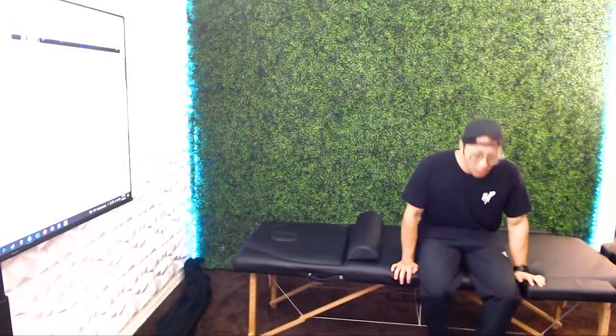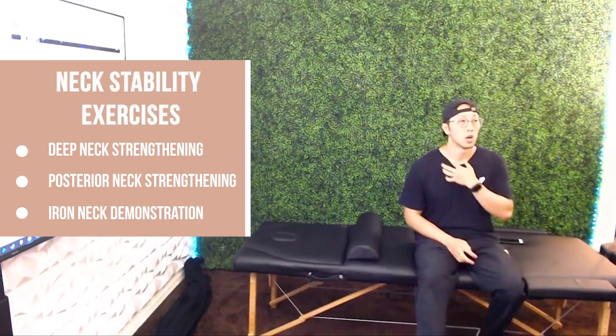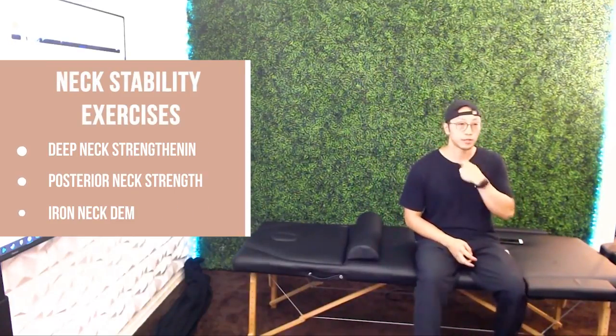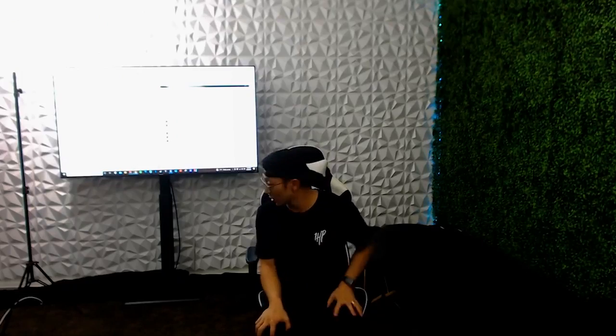Today we're going to focus on two major muscle groups: our deep neck flexors, the DNF, and also our cervical extensors — the muscles back here. Both of them contribute to making sure that we stay upright so that our head is not in that forward head position. We're also going to demonstrate a really cool tool, and we're going to answer questions at the very end.